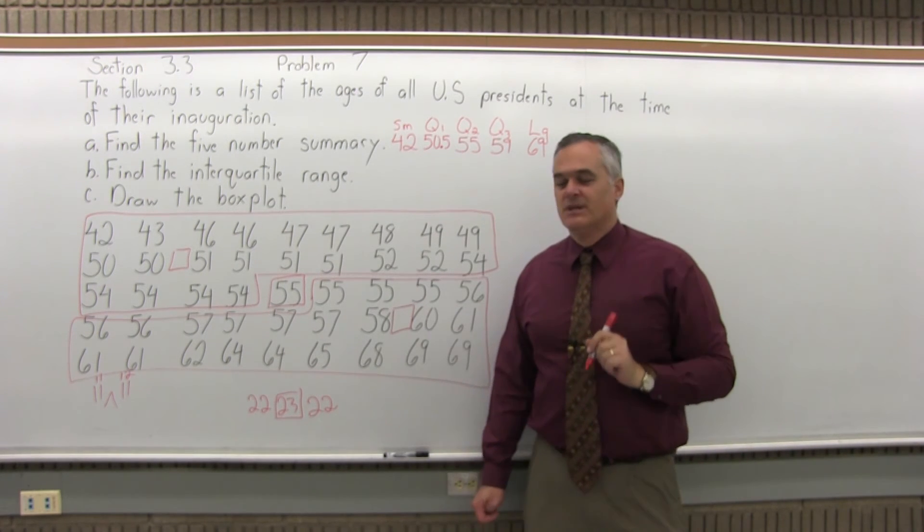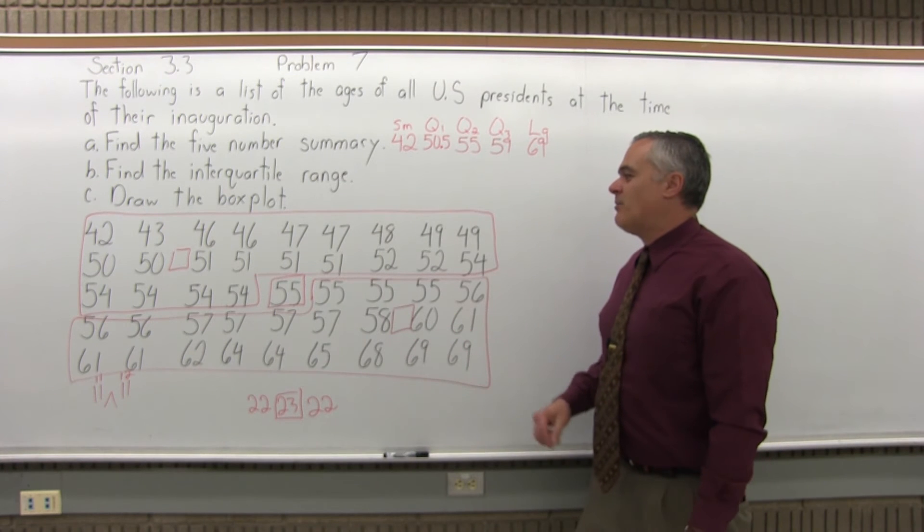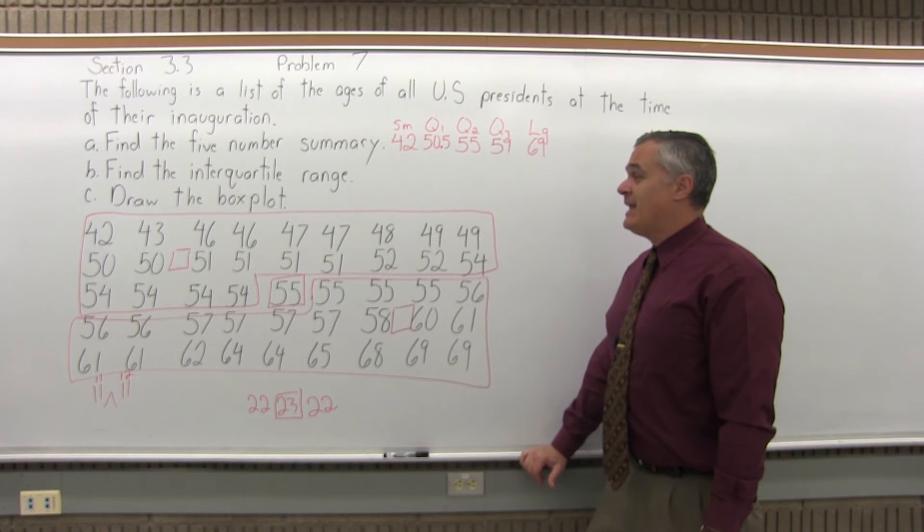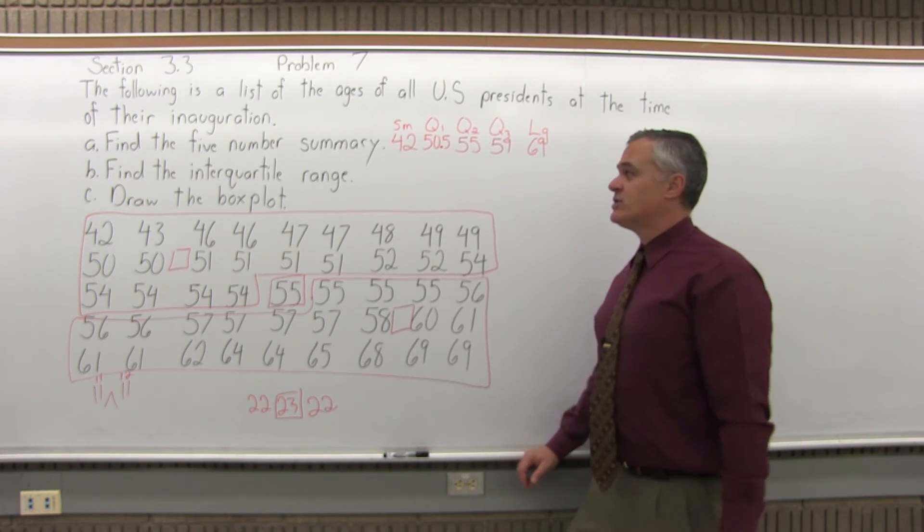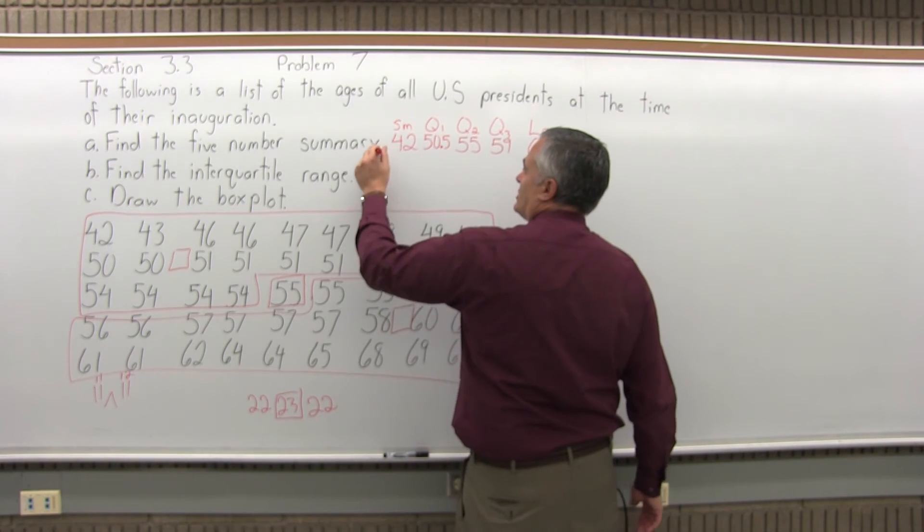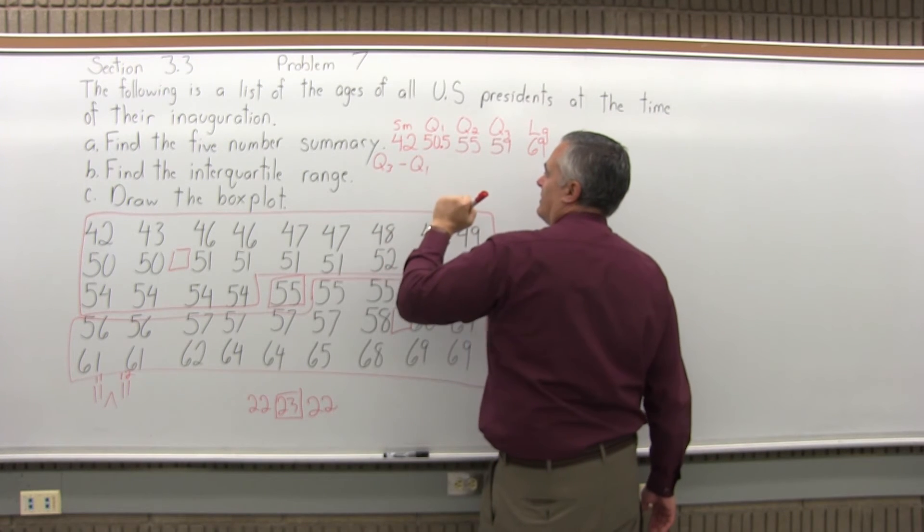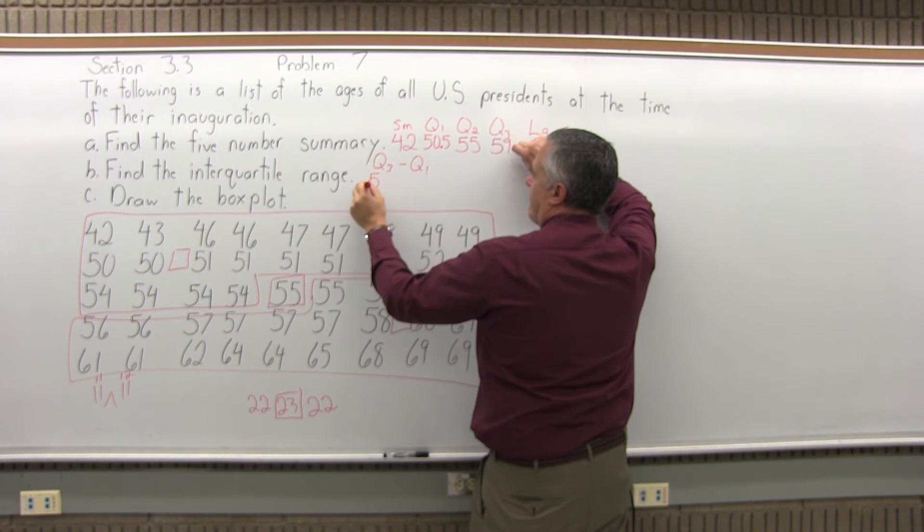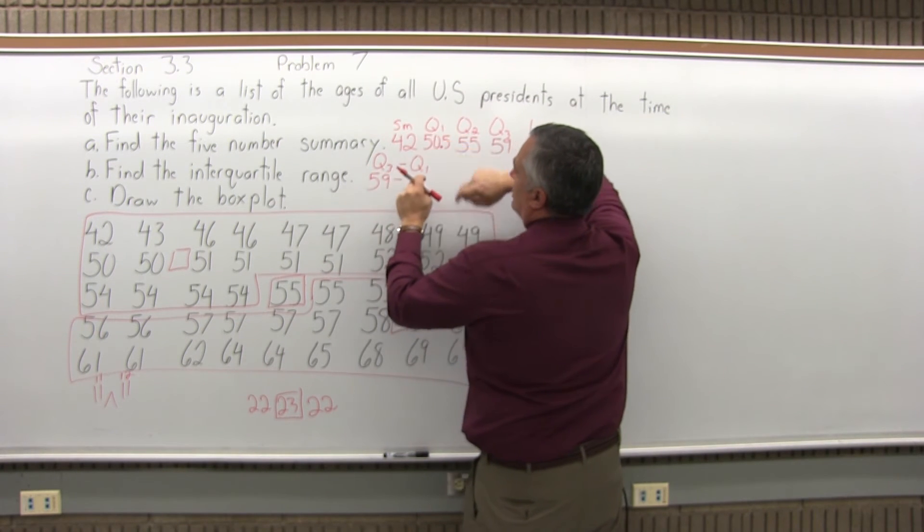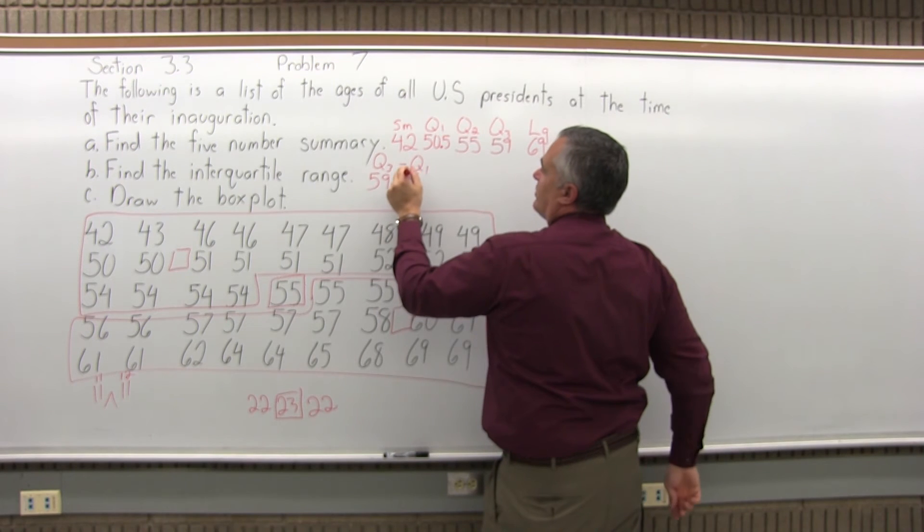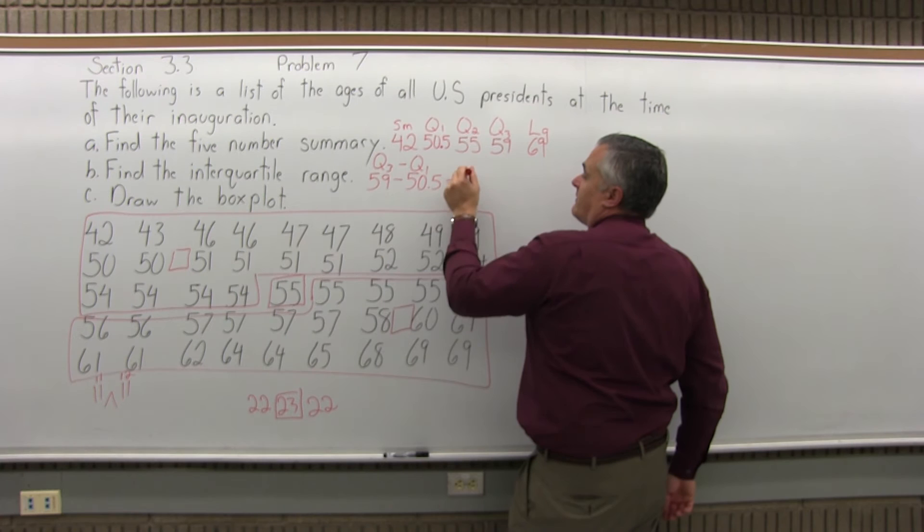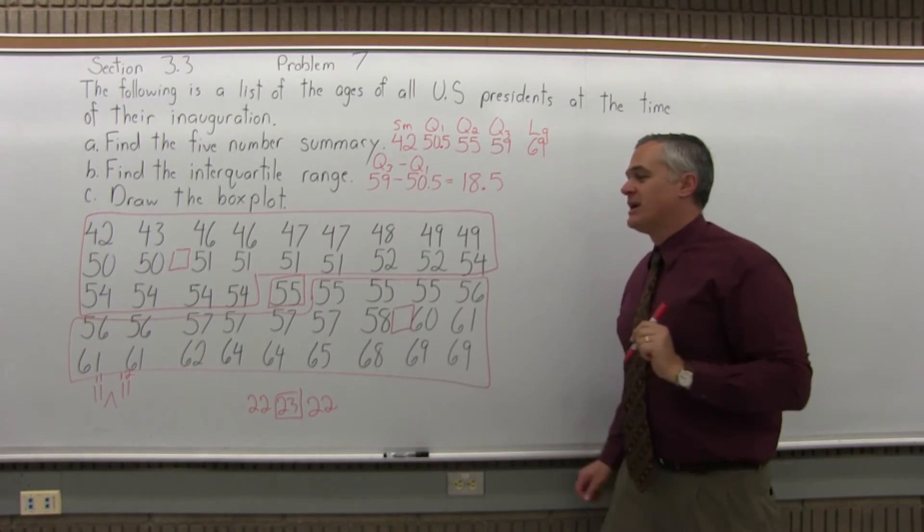There's my five-number summary. Big list of data, but because the data was in order, it made it not too bad. Now, next, the interquartile range. The interquartile range is Q3 minus Q1. For this data, Q3 is 59 minus Q1 is 50.5. If you subtract 59 minus 50.5, it will be 8.5. That's my interquartile range.